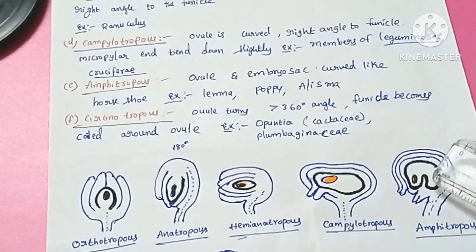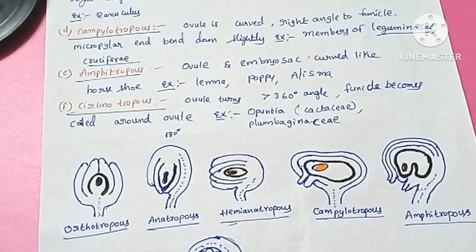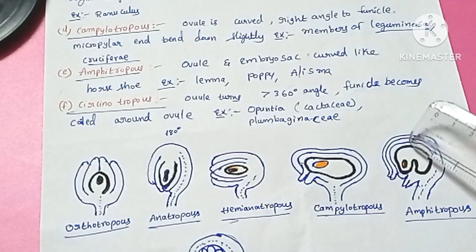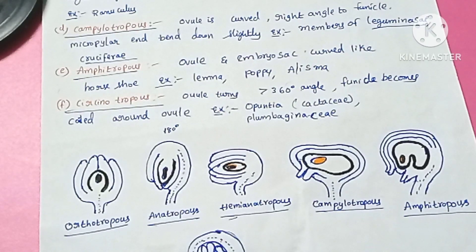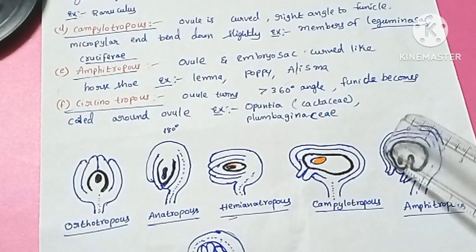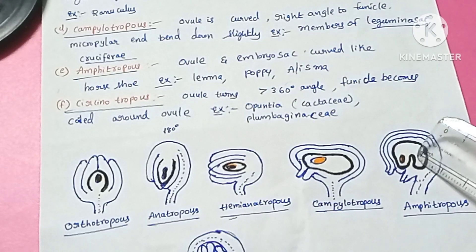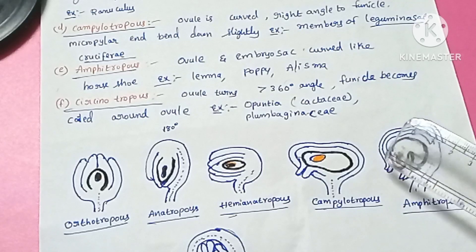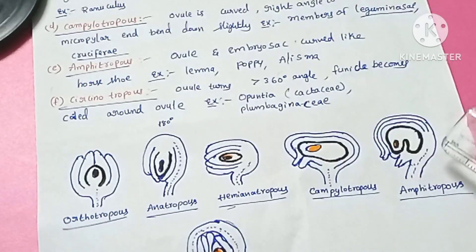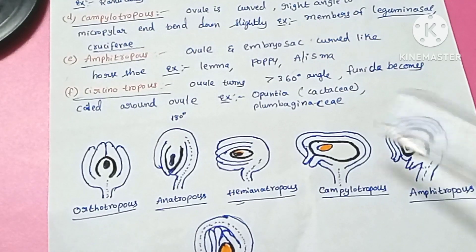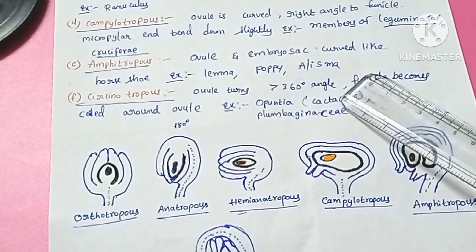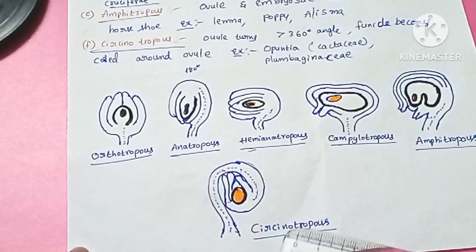The fifth type is amphitropous ovule. In this type, both the ovule and embryo sac are curved like a horseshoe shape. Examples include Lemna, Poppy, and Alisma species.